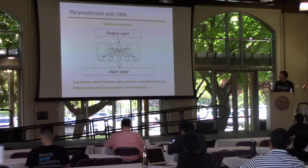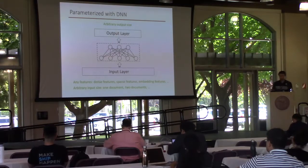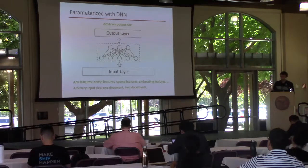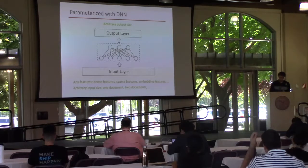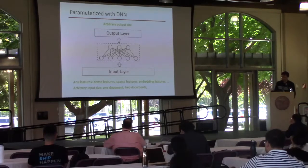For simplicity, we characterize all models as deep neural networks in this paper. DNNs have a couple of advantages for our problem. First, they support any type of features — dense features, sparse features, embedding features. Also, they can take arbitrary input sizes, meaning we can easily input one document, two documents, or even more. Additionally, the output of the deep neural network can also have an arbitrary size, which is important for our multivariate scoring functions.